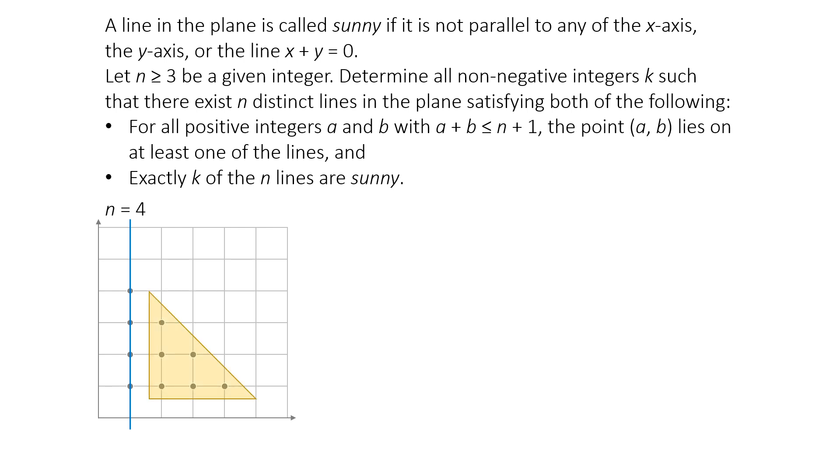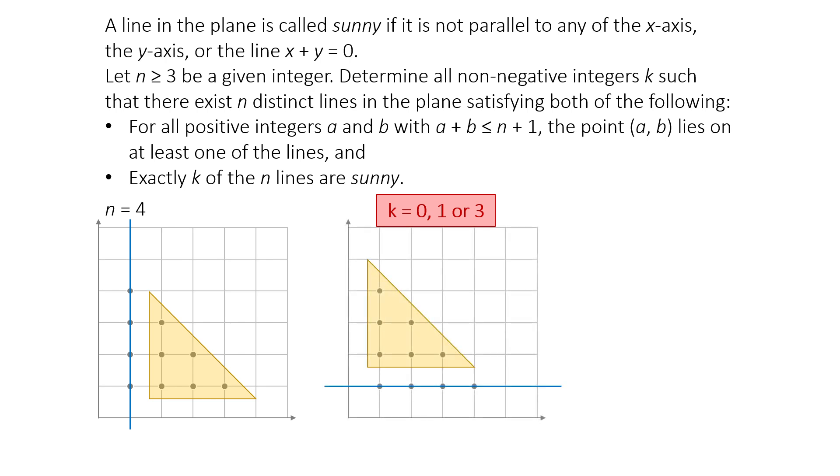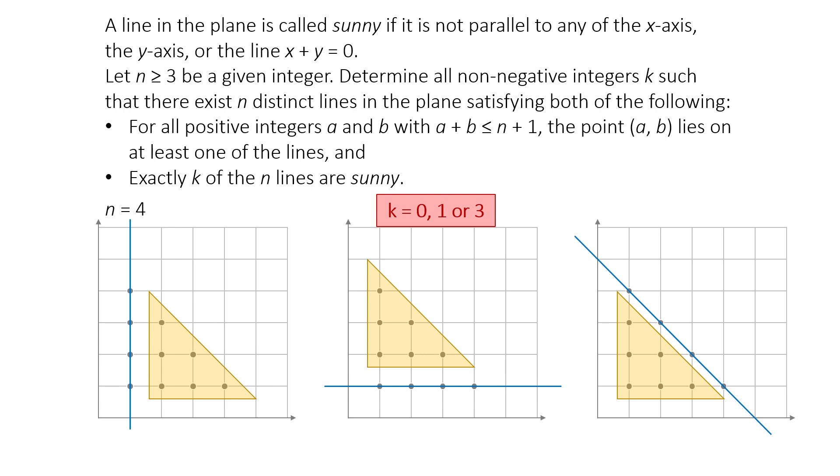And we already know for n equals 3, the number of sunny lines possible is just 0, 1, or 3. This is also the same if we use y equals 1, or x plus y equals 5. From all of this, we can see a pattern forming. For n equals 3, we carefully checked and saw that the possible values for the number of sunny lines k, are 0, 1, and 3.